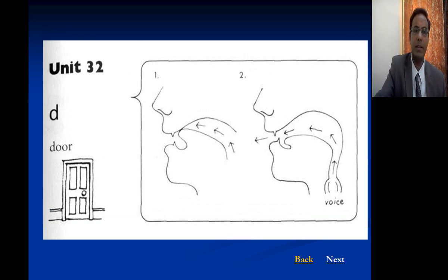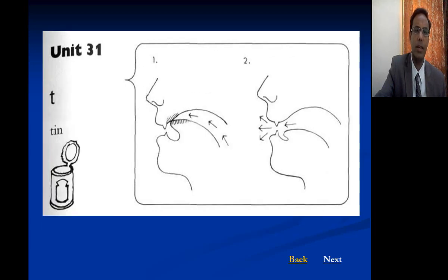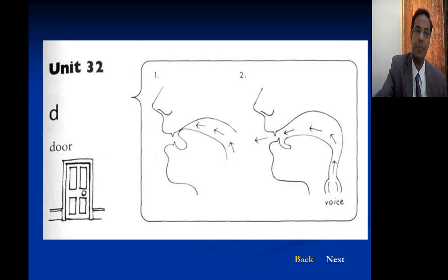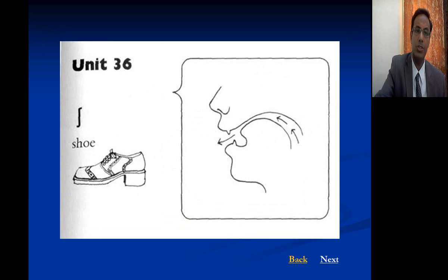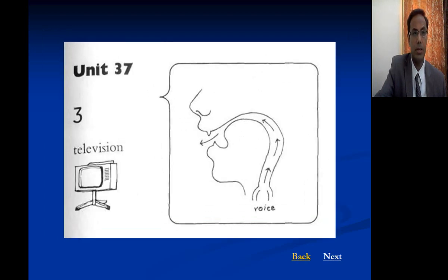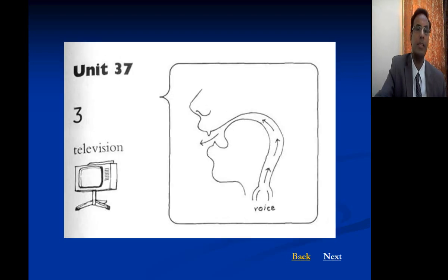Another example of a stop sound is D, as in 'door' — the same manner of articulation and the same place of articulation, but the difference between T and D is voicing. The SH sound is also fricative, and the difference between SH and J is that SH is voiceless while J is voiced.